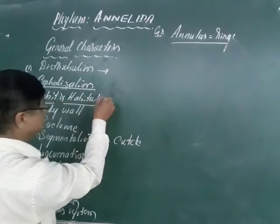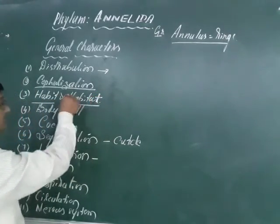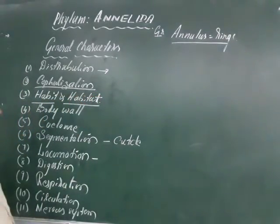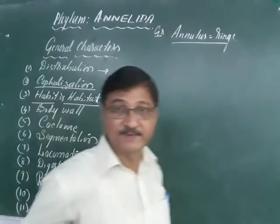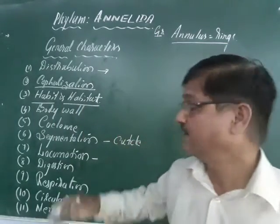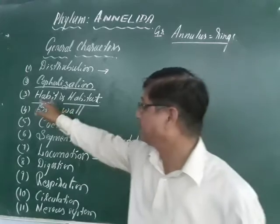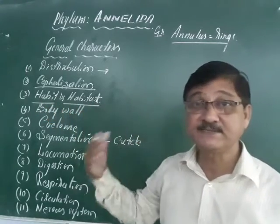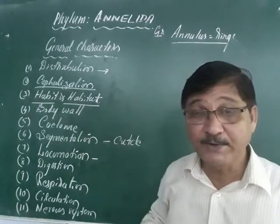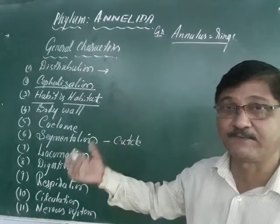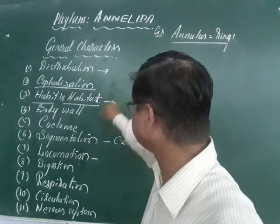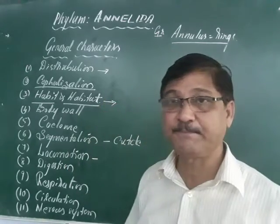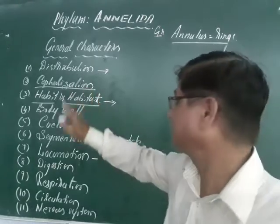Habit and habitat: habit means mode of life, living style, or mode of life of the animal. Habitat means where it is able to live, survive — the residing place of the animal is called the habitat.